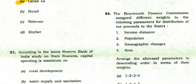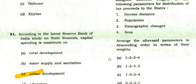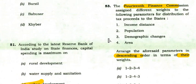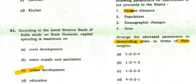The 14th Finance Commission assigned different weights to parameters for distribution of tax proceeds to states. Arranging in descending order: first income distance, then population, then area, then demographic changes — so the sequence is 1, 2, 4, 3.